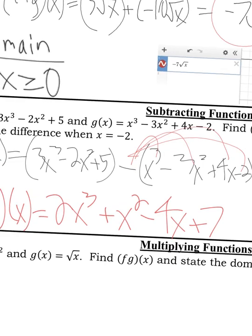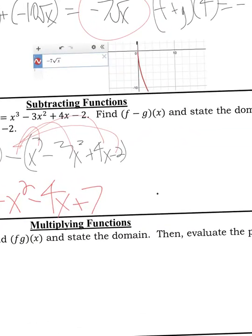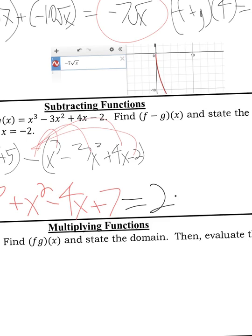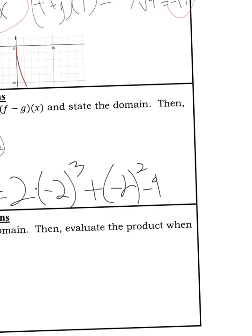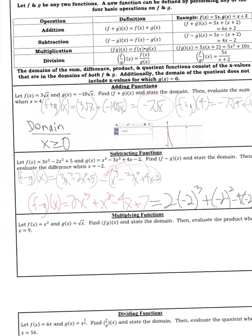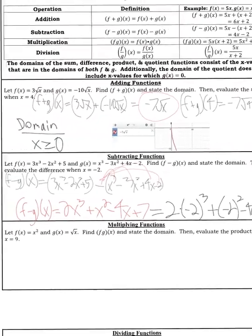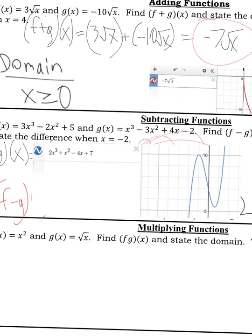Just plug in negative 2 for this one. To show your work, you'll write down 2x to the third. Only x is replaced by negative 2, of course. And then plus x squared. So plus negative 2 squared. Minus 4x plus 7. Minus 4 times negative 2 plus 7. Type that in and you get 3. Now let's take a look at the domain of it. I'm just going to graph this. Here is the graph. You can see it's moving freely left to right. So the domain here is all real numbers.